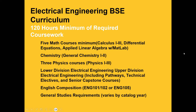The Electrical Engineering BSc curriculum is 120 hours minimum of required coursework: five math courses minimum, general chemistry with General Chemistry 2 being in the mix, three physics courses, lower and upper division specific engineering core work. All students at ASU are also required to complete English composition equivalent to English 101 and 102, and general studies dependent on their catalog year in the humanities and so forth.